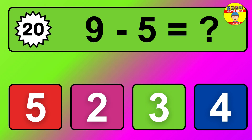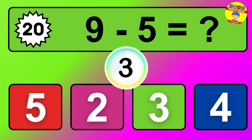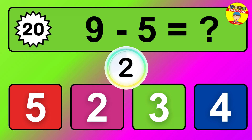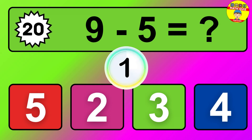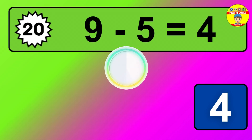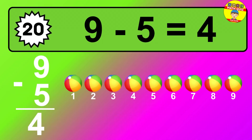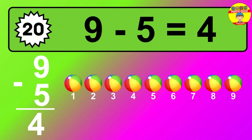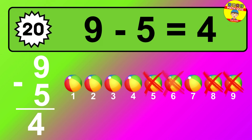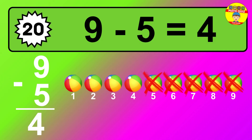Question 20. 9 minus 5 equals what? The answer is 9 minus 5 is 4. Let's count it: 1, 2, 3, 4.